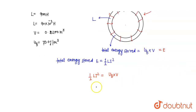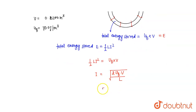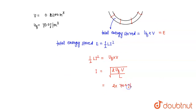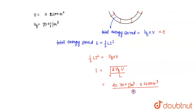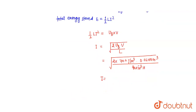From here we find the current I. I = √(2 × U_B × V / L). We put in all the values: U_B = 70.0 J/m³, volume = 0.0200 m³, divided by L = 90 × 10⁻³ H, and take the square root. Solving this completely, the current comes out to be 5.57 ampere. This is the answer to our question — how much current flows through the inductor: 5.57 ampere.